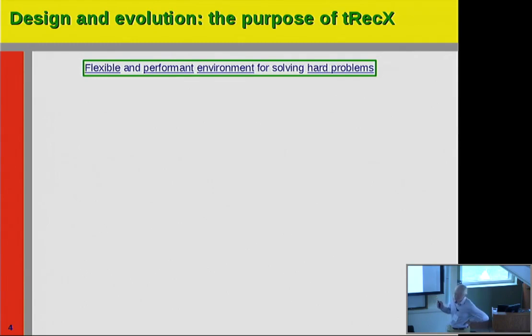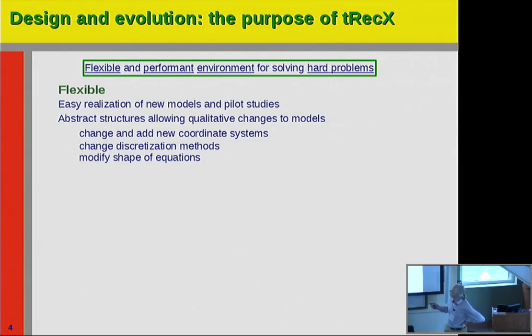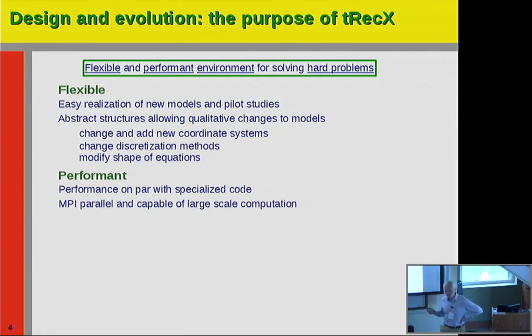By flexible, I mean it should be easy to put new models in and do quick pilot studies. On a more code level, it should be abstracted such that it can qualitatively change models, change to new coordinate systems, change discretization method, and modify the shape of equations with moderate effort. It should be performant — good enough to do real calculations on par with code that specializes to one task. That means, among other things, it should be parallel and able to do large-scale computations.